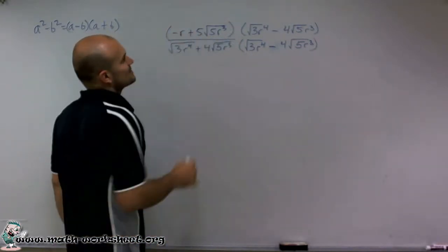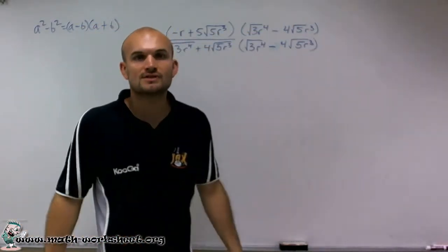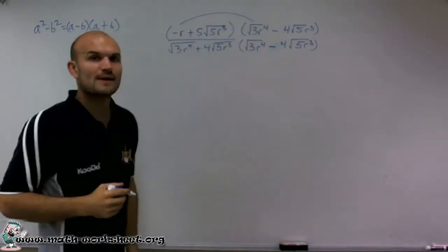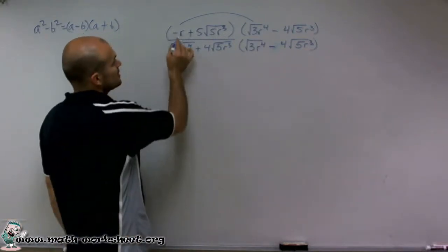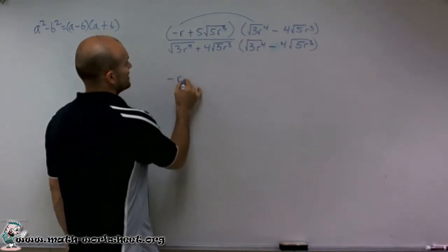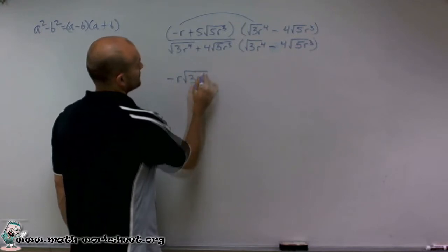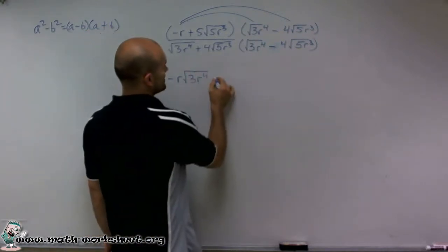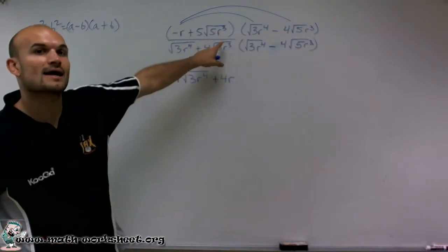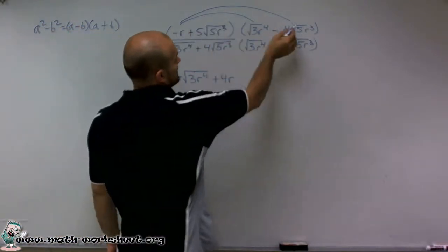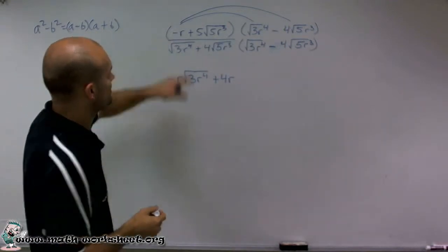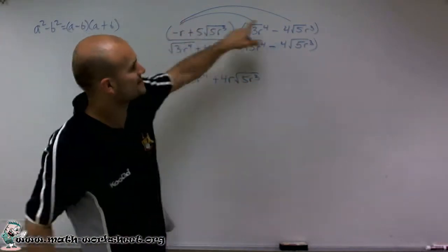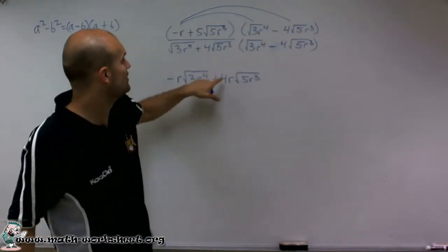Now for the numerator, it's a little bit more difficult. I'm going to apply the rules of multiplying two binomials. I'm going to use the FOIL method, which means multiply my first two terms. So negative r times the square root of 3r to the fourth is just negative r times square root of 3r to the fourth. Then I multiply the outer terms. Negative 4 times negative r produces positive 4r. When I multiply a radical by radical, I can multiply the two radicands, which gives me positive 4r times square root of 5r cubed.